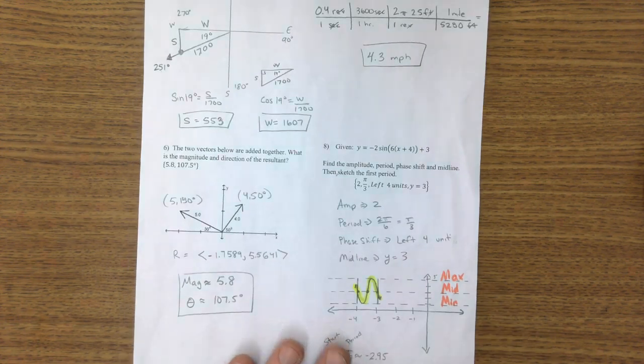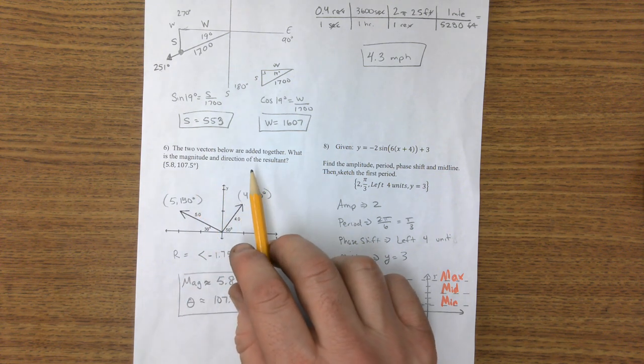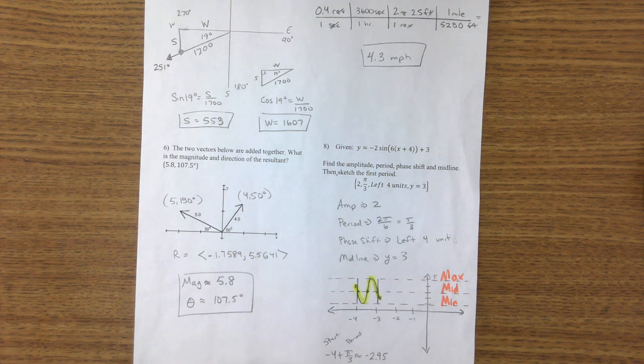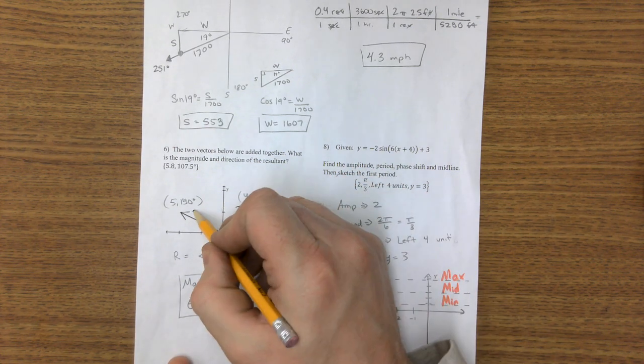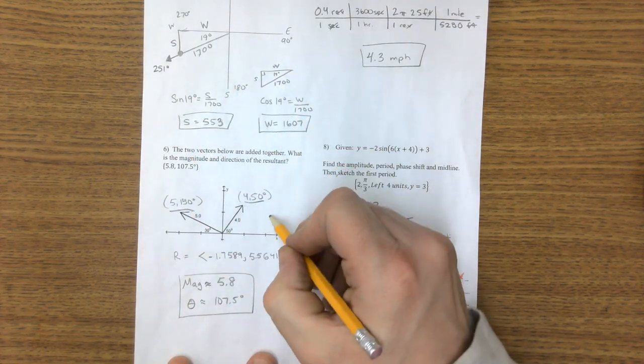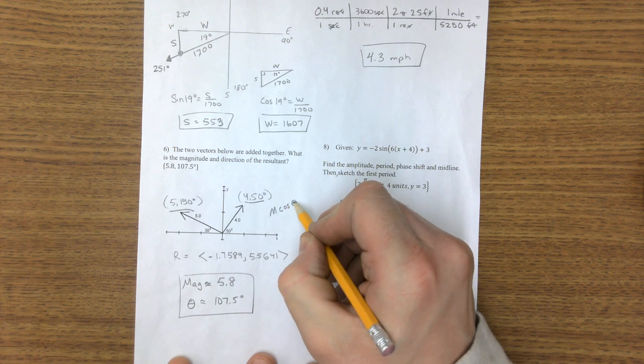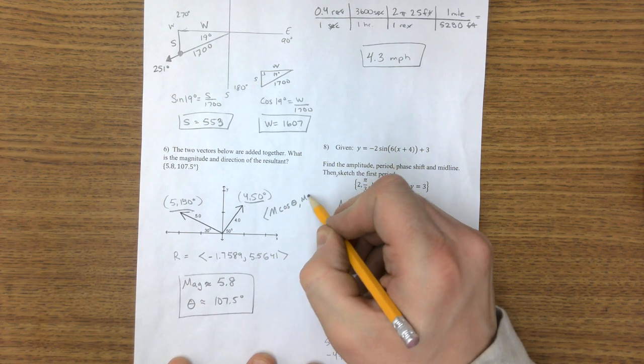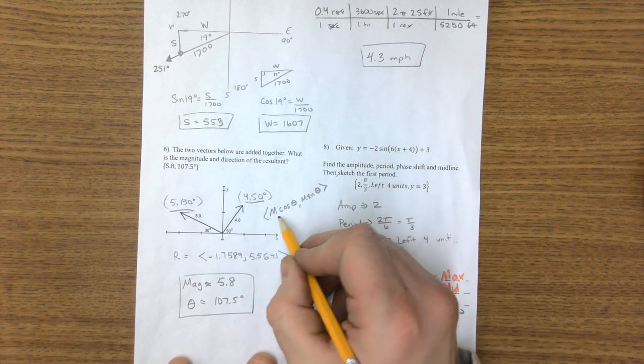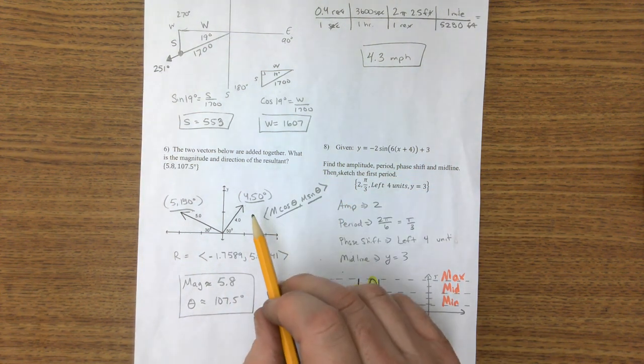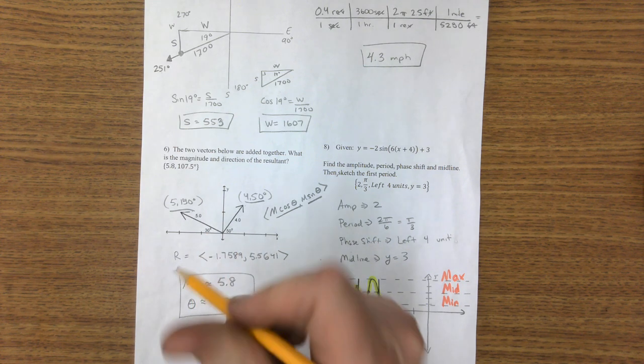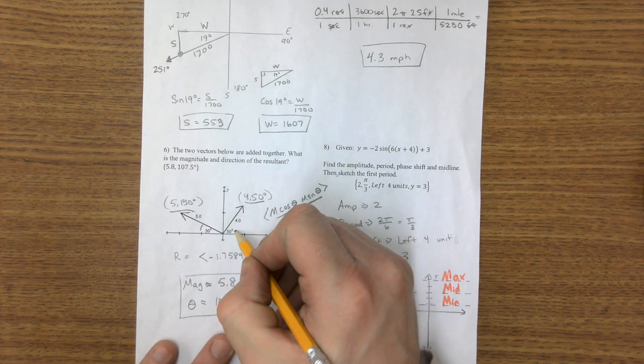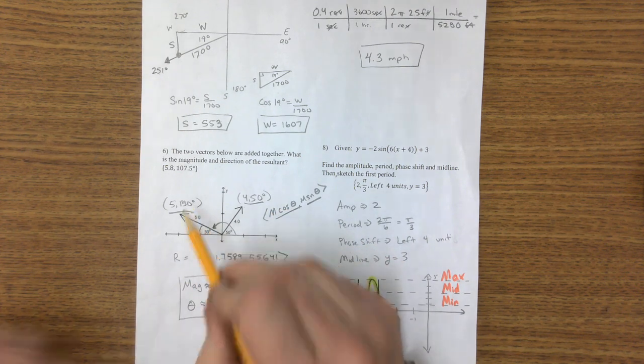Next, adding two vectors. We just add the vectors once they're in component form. So we have to take each of these vectors here and here and run them through M cosine of theta, M sine of theta. The only tricky part about this is that this value right here is this angle here, but we have to use it as a unit circle, so it's 150.